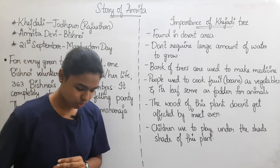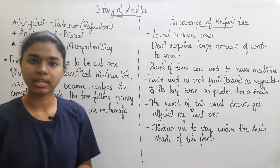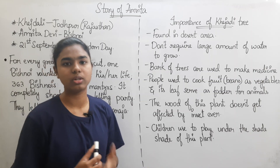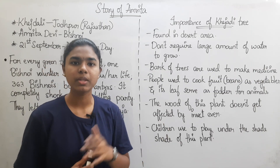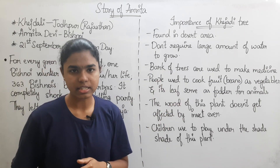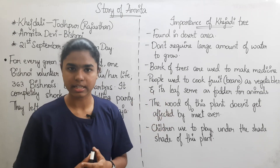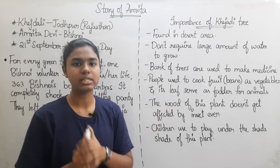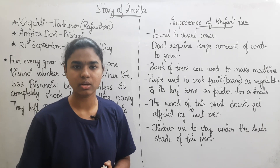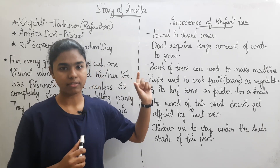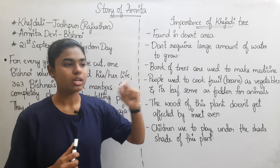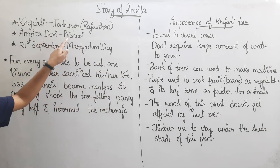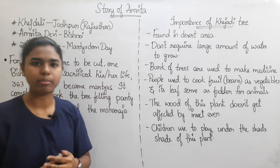The story is that there is a king in a village. The king ordered the cutting of Khejri trees. Soldiers were sent to fell the trees. Amrita Devi belonged to the Bishnoi community, and the village was a Bishnoi village.